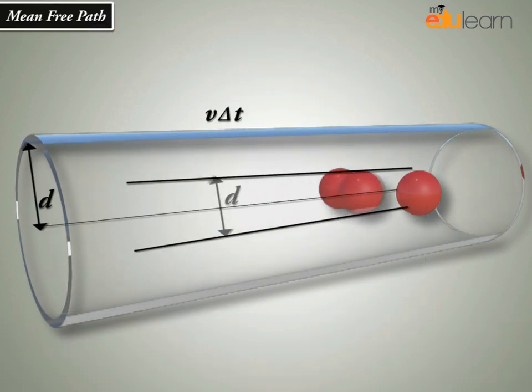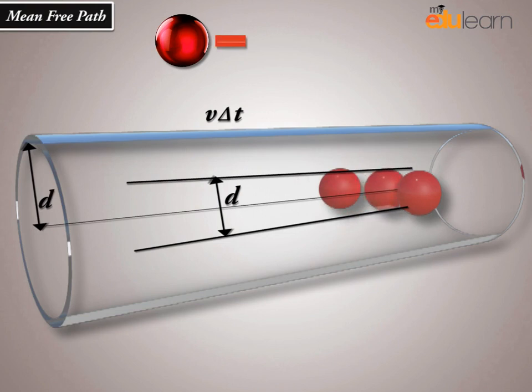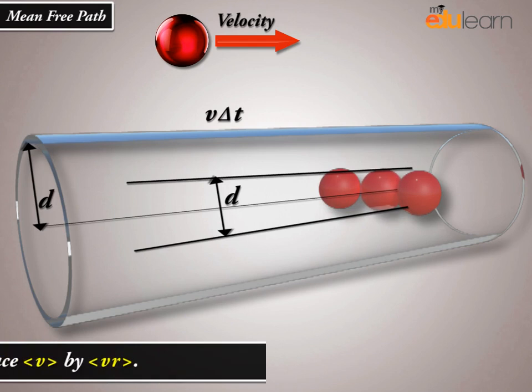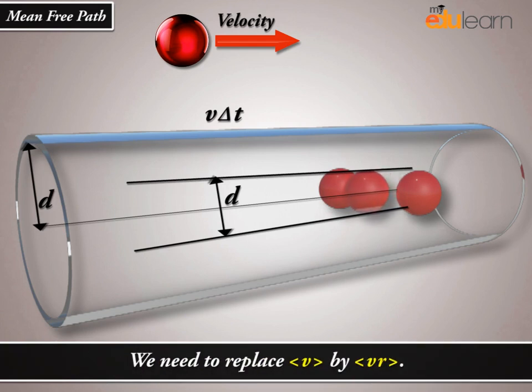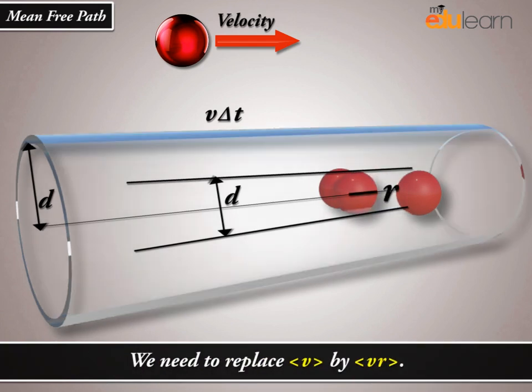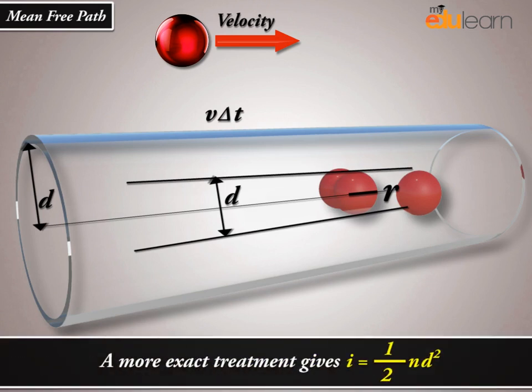In this derivation, we imagined the other molecules to be at rest. But actually, all molecules are moving, and the collision rate is determined by the average relative velocity of the molecules. Thus, we need to replace average V by average Vr. A more exact treatment gives λ = 1/(√2 N d²).